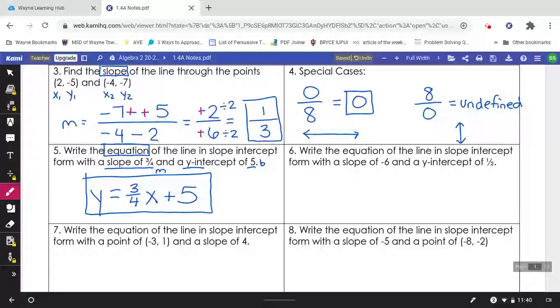For problem number 6, it's the same type of thing as problem number 5. Your slope of m and your y intercept of b. Notice that the b is a fraction; that doesn't change anything. It still goes in for the letter b, and m is still your slope. See if you can write that equation.